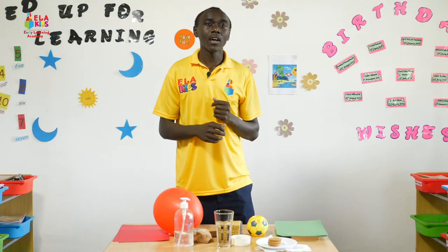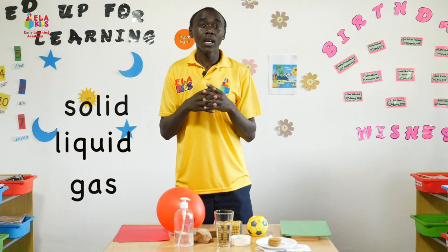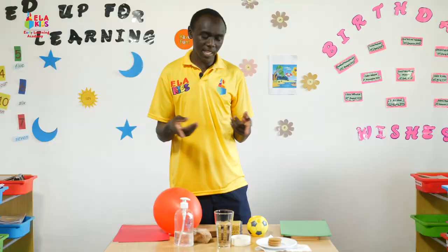Matter has been subcategorized into three states: one, we have solid; two, we have liquids; and three, we have gases. Matter has been put into those three categories because of their particular arrangement. But before we move to that, can we look at some of the examples of matter that I have on my table?